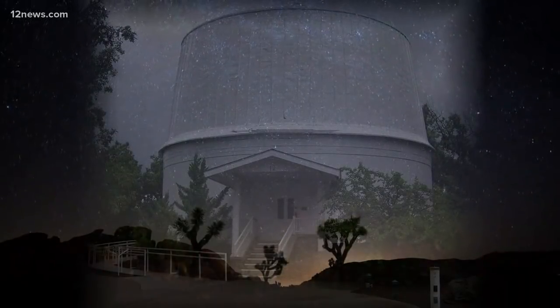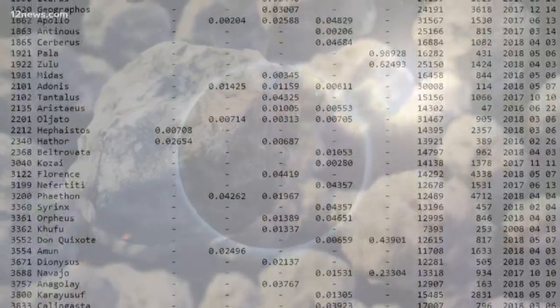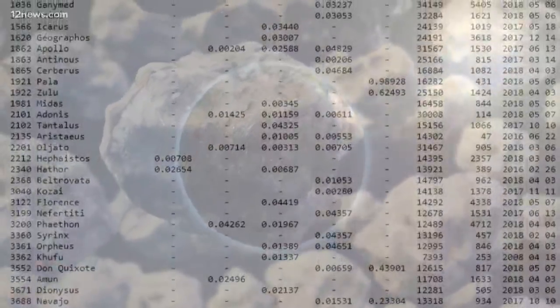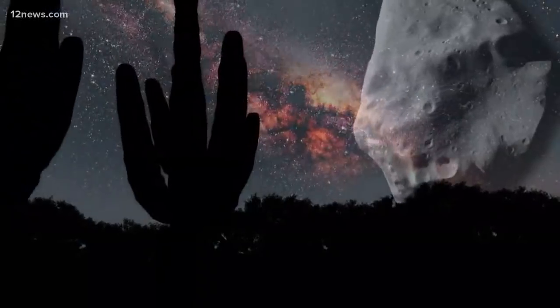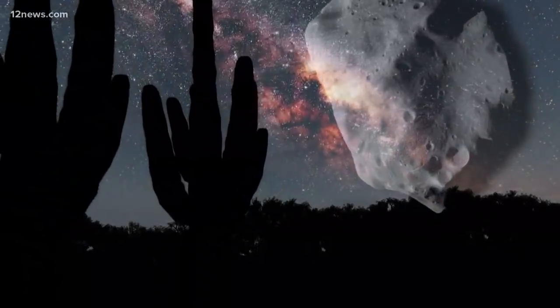Lowell Observatory scientists help maintain a giant database of more than 775,000 known asteroids in the solar system. If they say we have nothing to worry about, then we have nothing to worry about.